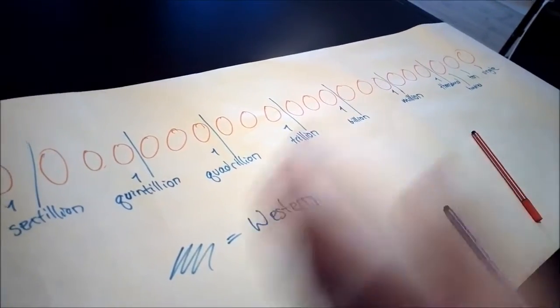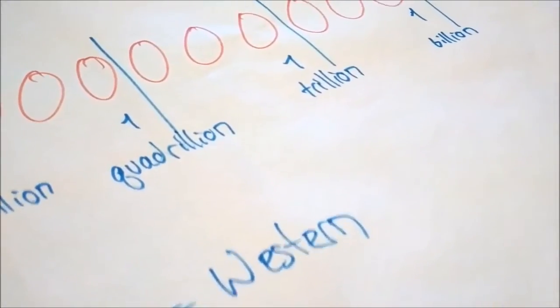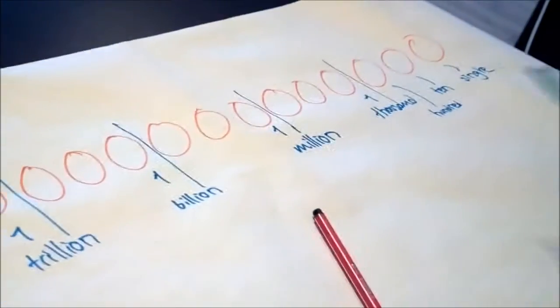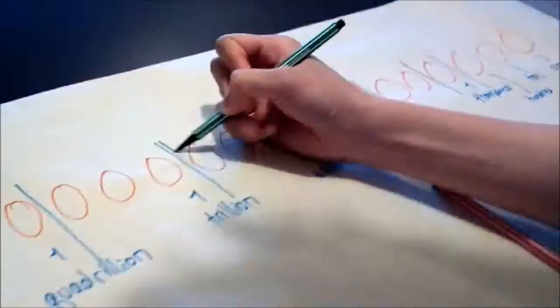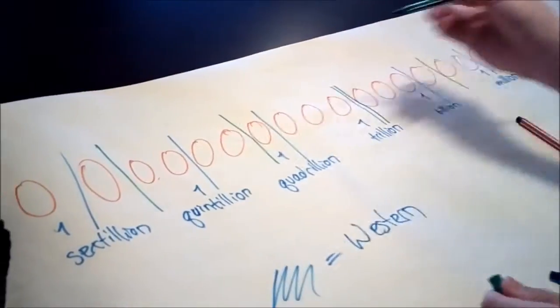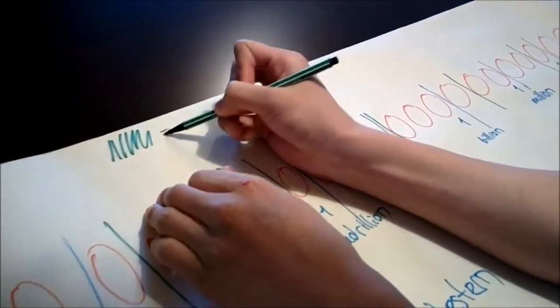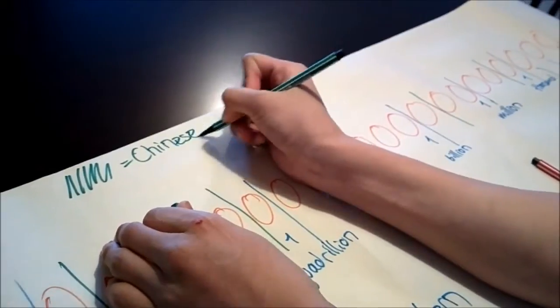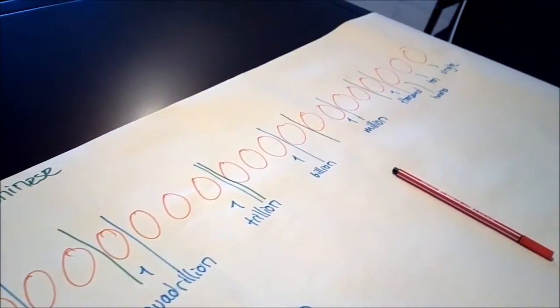So, but the Chinese have it a little differently. As I mentioned before, we have a four zero system. So instead of three, like a gap between every three, there's a gap between every four. The green is Chinese. I'm not sure about other Asian countries, but this is what the Chinese use. So Western Chinese, the green lines mean the Chinese stuff.